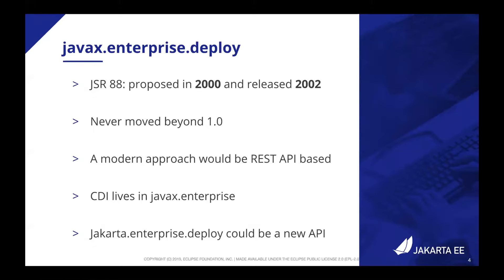Another aspect is that javax.enterprise.deploy occupies a namespace where CDI lives — everything CDI lives under javax.enterprise. Do we want to move this specification into jakarta.enterprise and still have it sitting there taking namespace away from CDI and the concurrency utilities, which also live under javax.enterprise.concurrency? If we were to create a new enterprise deploy API, we would want cloud vendor support and would want to do it fresh. What package would we use for the newer API, and how would we explain the difference to people?